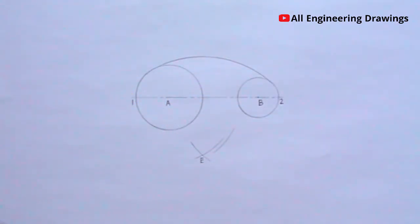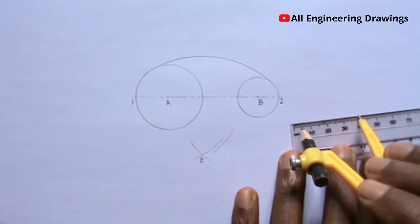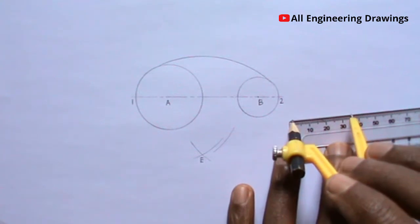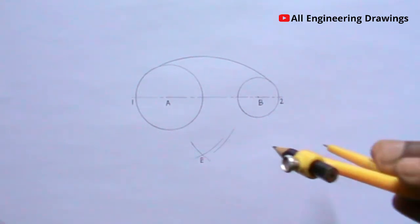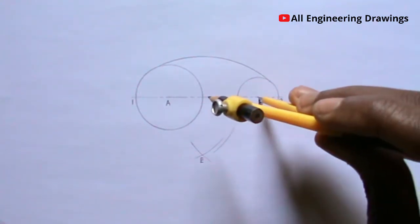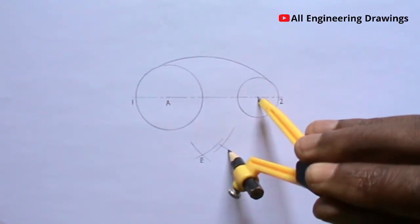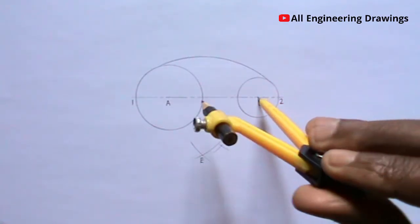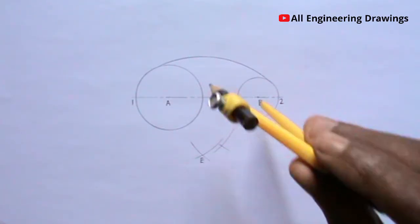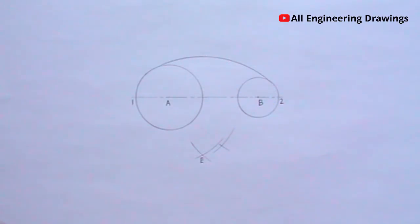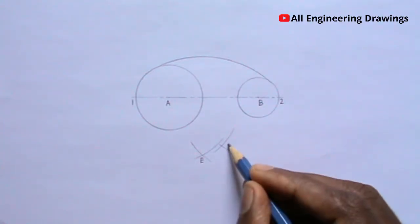Also add the radius of the external arc and the radius of the smaller circle, then extend your compass to the value you obtain. Place your compass on point B and cut an arc to intersect the previous arc. Label the point where the arcs intersect.